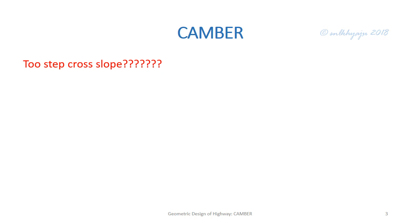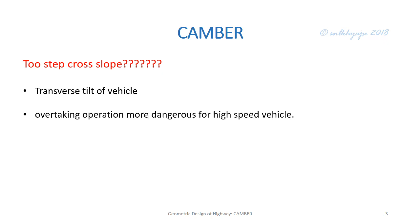If we provide a high cross slope camber, the effects are: first, the transverse tilt of vehicles causes uncomfortable side thrust and drag on the steering of automobiles; also, the thrust on the wheel along the pavement edges is more, causing unequal wear of tires as well as road surface; and overtaking operations become more dangerous for high-speed vehicles; and there is a problem of overtopping of highly loaded trucks.